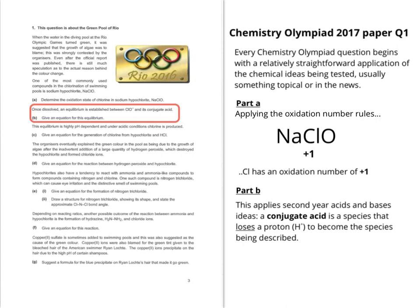Moving on to Part B: once dissolved, an equilibrium is established between ClO⁻ and its conjugate acid. It asks you to give an equation for this equilibrium. This requires understanding of acids and bases. In first-year acid-base chemistry, we learn that acids are species that lose a proton in aqueous solution. So a conjugate acid of a given species is that species with a proton added back on. If you've got ClO⁻, it must combine with H⁺ to give HClO. With all species in aqueous solution, you can write an equilibrium equation like that. Other possibilities using the hydronium ion instead of H⁺ are also valid.